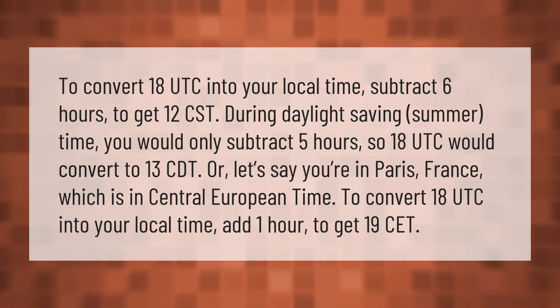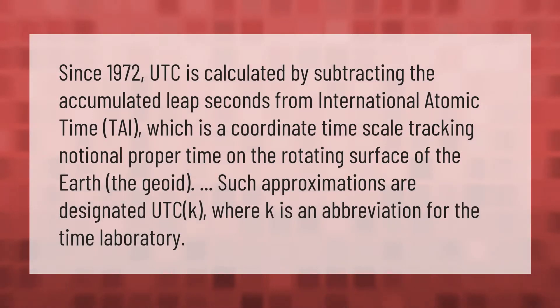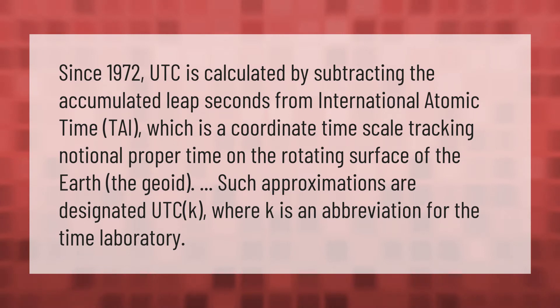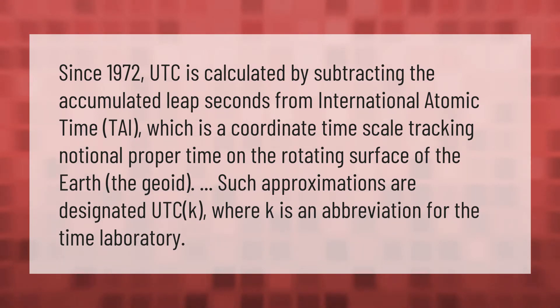Since 1972, UTC is calculated by subtracting the accumulated leap seconds from International Atomic Time (TAI), which is a coordinate time scale tracking notional proper time on the rotating surface of the Earth — the geoid. Such approximations are designated UTC-K, where K is an abbreviation for the time laboratory.